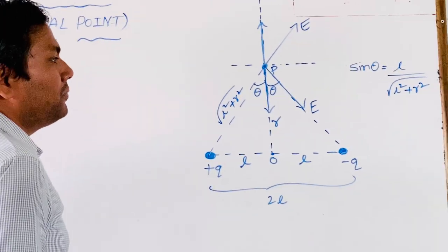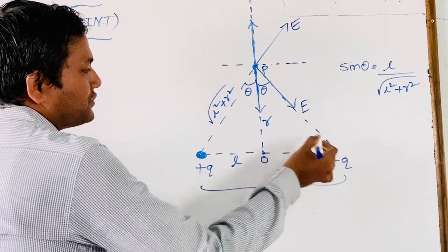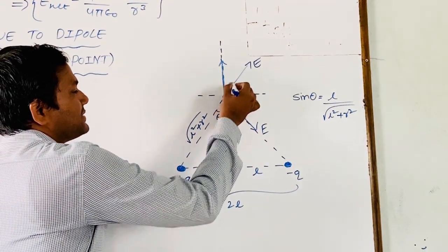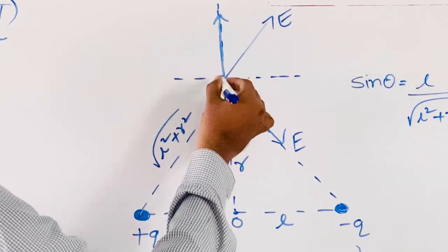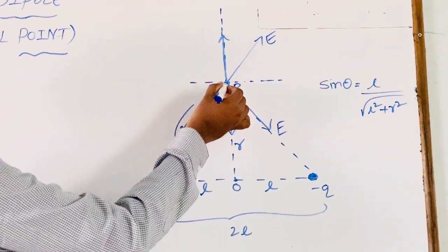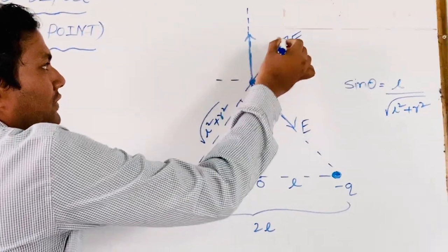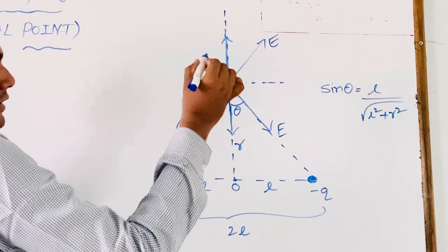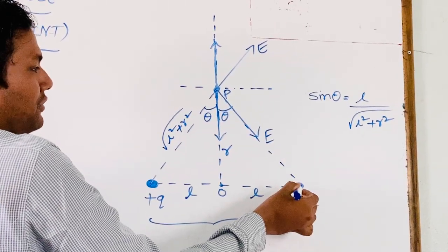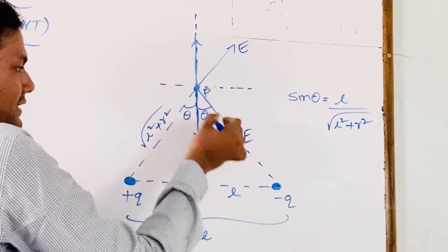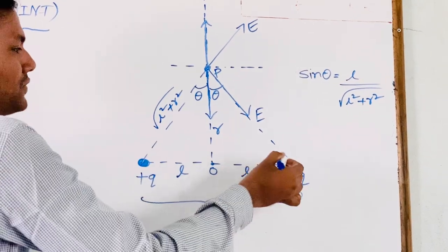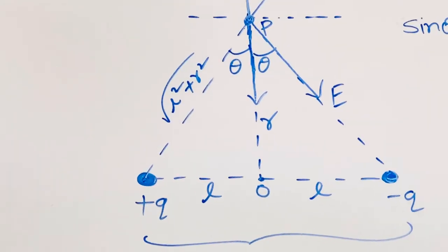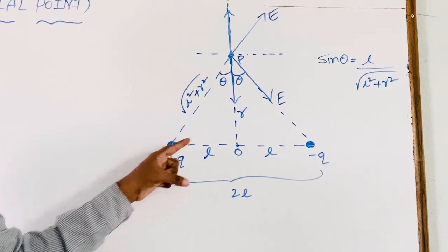First of all, we label the direction of the electric field due to these two charges. This is plus Q, this is minus Q. Due to plus Q, the direction of the electric field at point P is in this direction. To decide the direction, suppose you place a plus 1 coulomb charge here — that plus 1 coulomb experiences a repulsive force away from plus Q. That is the direction of the electric field. Similarly, it experiences attractive force towards minus Q, giving the other field direction. Since plus Q and minus Q are both at the same distance — square root of L² plus R² — the electric field magnitude is also the same at point P due to both charges.